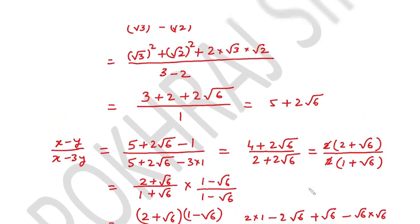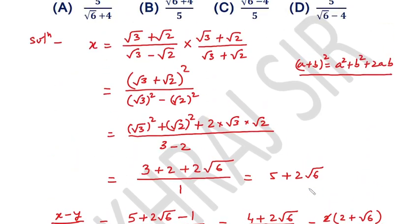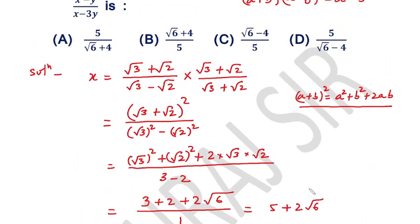Now checking the options, our answer matches option B: square root of 6 plus 4 over 5.